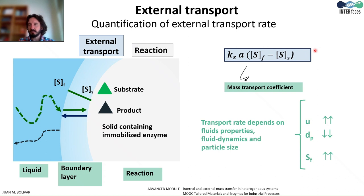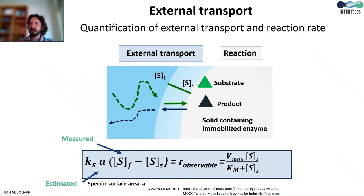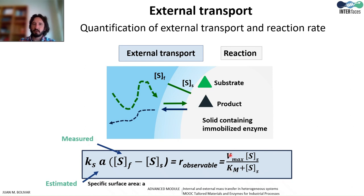To get a bit deeper into how this transport rate affects the performance of the immobilized catalyst, it is very interesting to compare this rate with the rate of the biochemical reaction. So in a situation of steady state, where the substrate concentration is constant over time, the rate of mass transfer equals the rate of the biochemical reaction. The rate of the biochemical reaction is expressed by a Michaelis–Menten equation that depends on Km, the Vmax of the immobilized enzyme, and the substrate concentration accessible to the enzyme — that is, the substrate concentration at the solid surface.